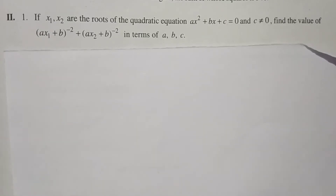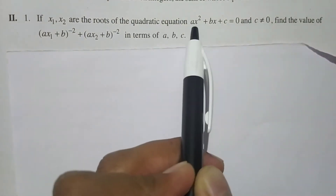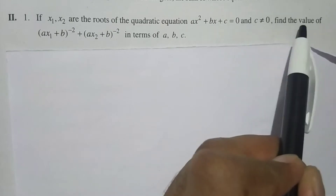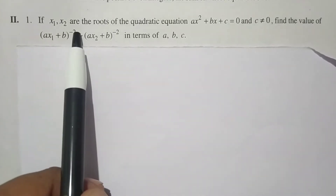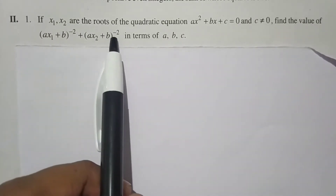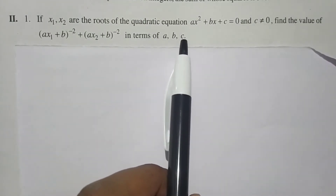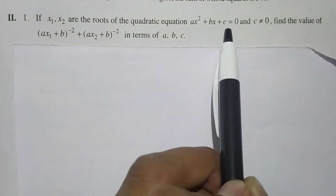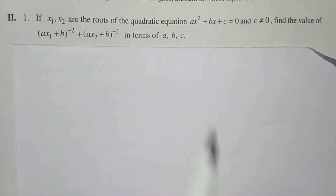In this video we will solve this question: if x₁ and x₂ are roots of the quadratic equation ax² + bx + c = 0, where c ≠ 0, find the value of (ax₁ + b)⁻² + (ax₂ + b)⁻² in terms of a, b, and c.